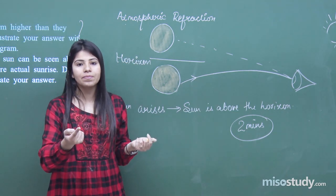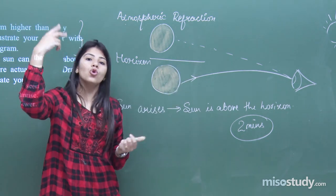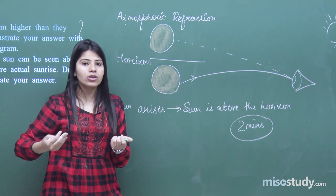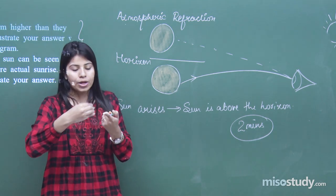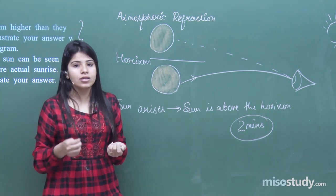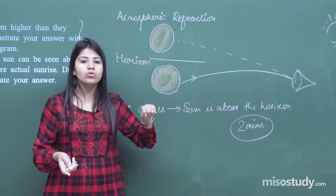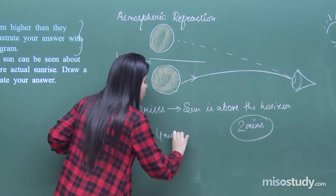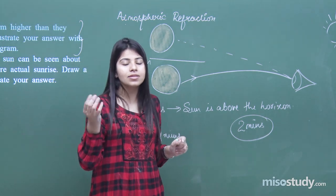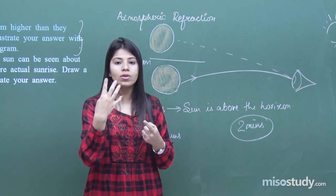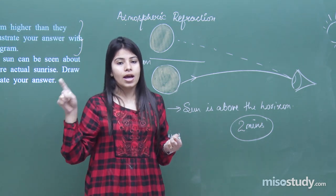At sunset the same procedure happens — the sun appears above the horizon while it is actually below. So there is a total time gap of four minutes: two minutes during sunrise and two minutes during sunset — two plus two equals four minutes. This means if there were no atmosphere, as in space, our day would be four minutes shorter in terms of visible sunrise to sunset duration.